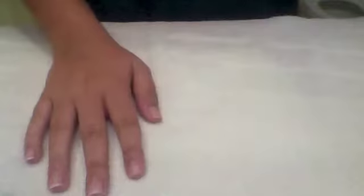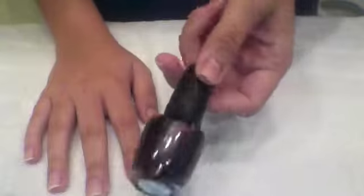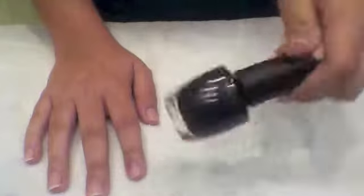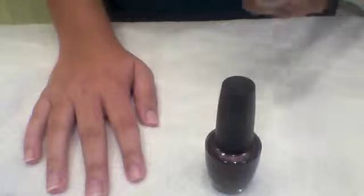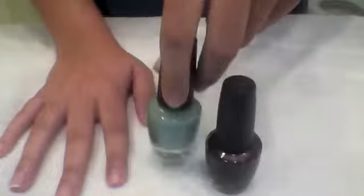My nails are already filed and buffed. The things you're going to need are two OPI polishes. The first one is Vampsterdam and the second one is this teal one called Thanks a Wind Million.